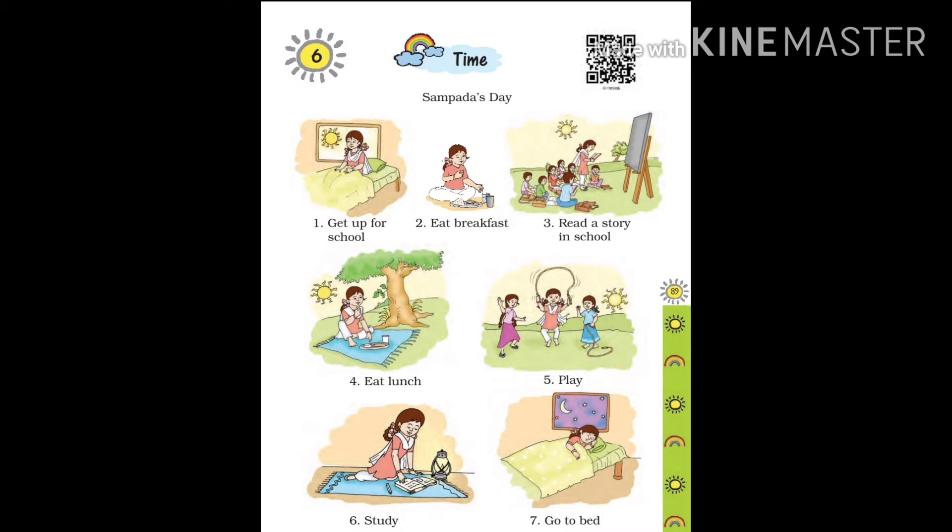Fifth, she plays — yani ki maachvhi activity. Jo woh kar rahi hai, woh kya kar rahi hai? Khelne ki. Aur hum kab khelne jate hain? Sham ko. Sixth, study — aur hum padhai bhi kab karte hain? Sham mein.